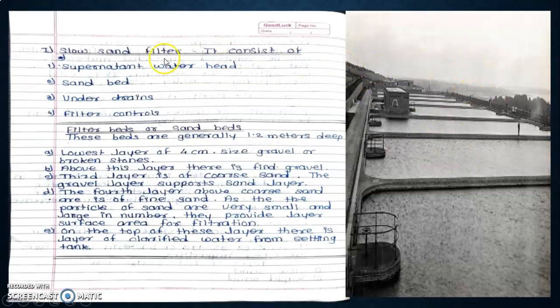Slow sand filtration consists of supernatant water head, versal layer, sand bed, under drain, and filter controls. These beds are generally 1.5 to 1.2 meters deep. The lowest layer is 4 cm size gravel or broken stones.